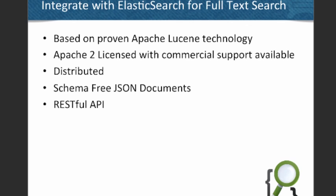So why Elasticsearch? There are a number of open source technologies out there for doing full-text search. This is based on Apache Lucene, which is a proven library — there are a lot of projects that use Lucene at the core, so it's something you have a lot of trust in. It's Apache 2 licensed, so you have the source code available if you need to dig in or understand how it's working. It also has commercial support, which is going to be important for customers as they want to take this into production.